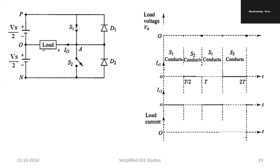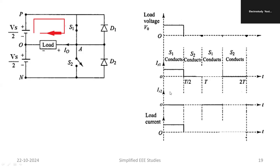First, S1 will turn on by providing a suitable gating pulse. When S1 is on, current flows from VS/2. You can see the current flow in the animation. When current flows through the load, the voltage across the load becomes positive, and the input current direction is also positive. The load current is also positive. No current passes through switch S2 because it is in the open condition — Is2 is 0. Maximum current flows through switch S1 because it is turned on. That is the operation during the first half cycle.